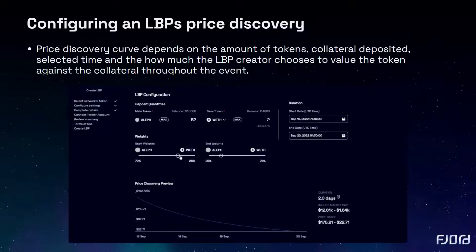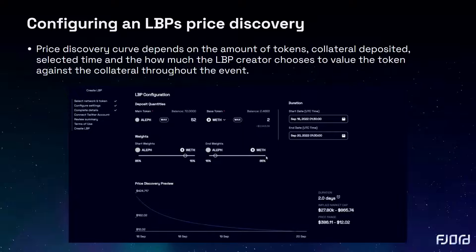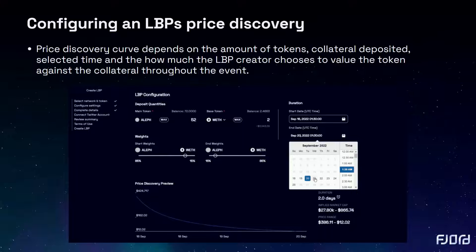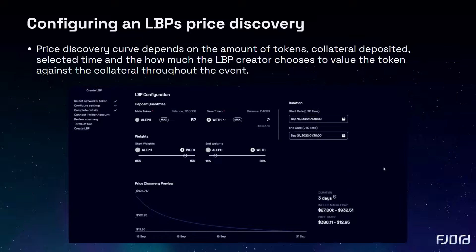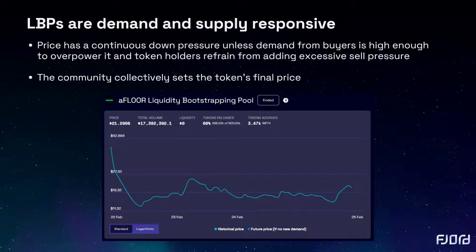This creates a fairer experience for participants when compared to other token distribution models where bots and bad actors negatively impact the event and there is a race to buy. During the creation process is where you can set your price curve and deflate or inflate the value of the token against the value of the initial liquidity. LBPs are demand and supply responsive. As the price decreases, buyers step in, resulting in the price increasing.